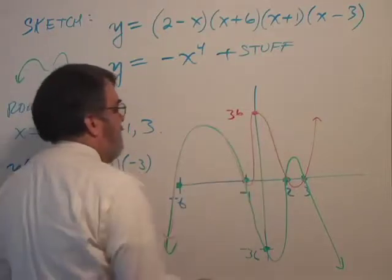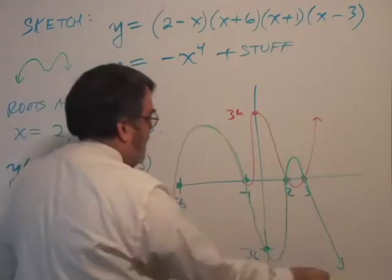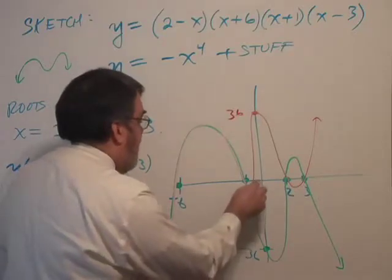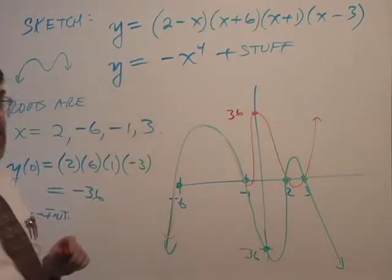To make it go down the right, I'd have to cross the axis again. But look what happened. I created an extra root by doing that.